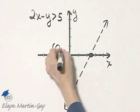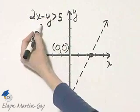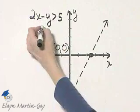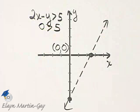I'm going to check the point with coordinates 0, 0. So I'll let x be 0 and y be 0. If x is 0 and y is 0, I have this inequality, which is either true or false.